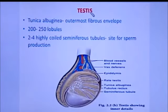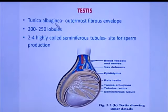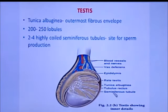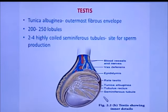Next, we are going to learn in detail about the testes. The testes are covered by an outermost fibrous envelope called tunica albuginea. This tunica albuginea has many lobules — about 200 to 250 lobules. Inside each lobule there are 2 to 4 highly coiled structures called seminiferous tubules. These seminiferous tubules are the place where sperm production or spermatogenesis takes place.